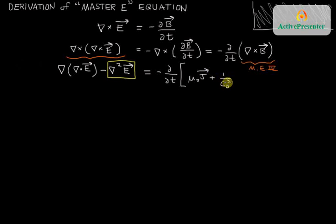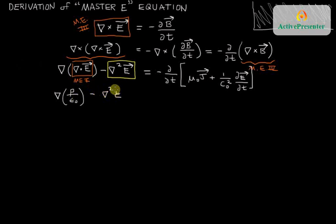And the second term, I'll choose to write the constants as 1 over c₀ squared times dE/dt. I'll notice in passing that here was Maxwell equation 3 for the curl of E. We've got Maxwell equation 4 for the curl of B. And here's Maxwell equation 1 for the divergence of electric field. So, this term here can become the gradient of ρ over ε₀. This stays minus del squared of E.